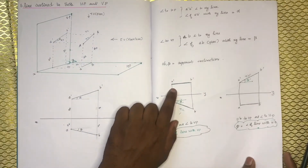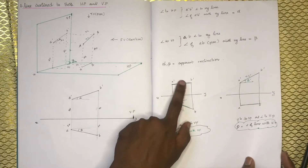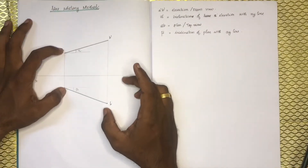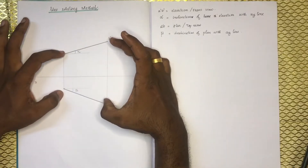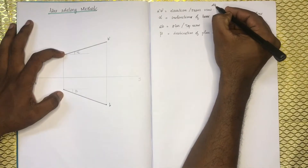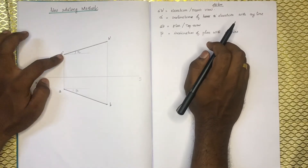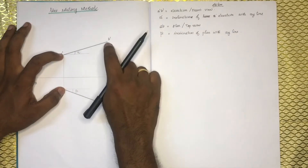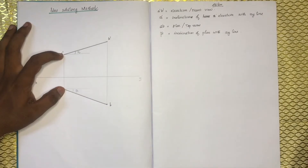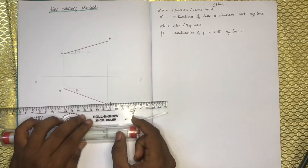If A dash B dash is parallel to the XY line — exactly: we will write the line A dash B dash parallel to the XY line. The left point is fixed and the right point is fixed.